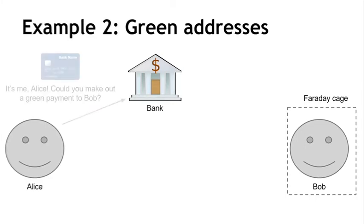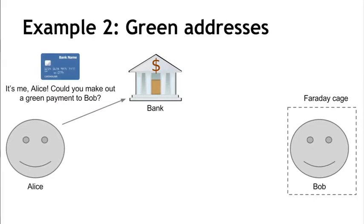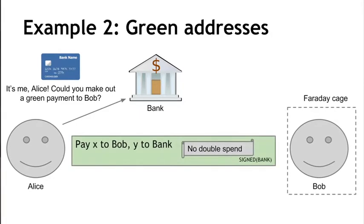Alice is going to talk to her bank and say she's a loyal customer and would like to pay Bob. The bank will say it's going to deduct some money out of Alice's account and draw up a transaction from one of its green addresses over to Bob. Notice that this money is coming directly from the bank to Bob — some of the money in a change address may go back to the bank. Essentially, the bank is paying Bob from a bank-controlled address.